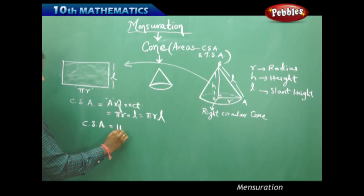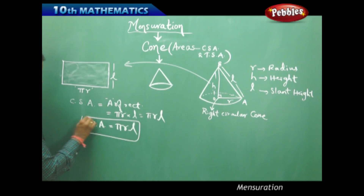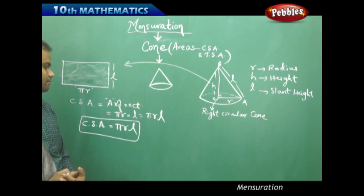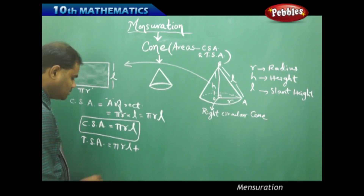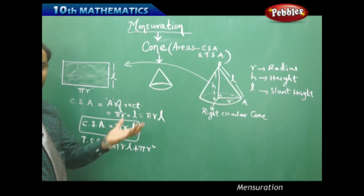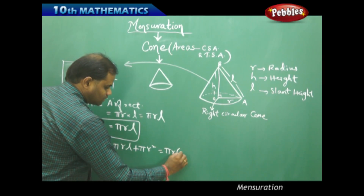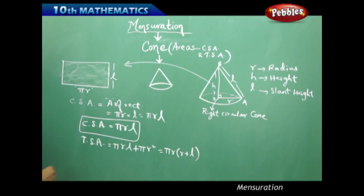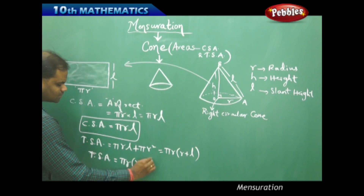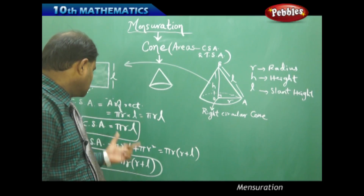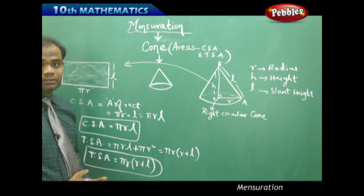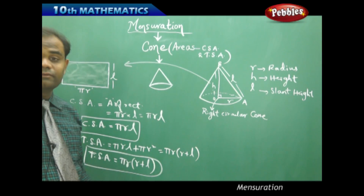Similarly, if I want to find the total surface area, it is πrl plus the area of the circular base, which is πr². On simplification this gives πr(r + l). Therefore, the TSA of a cone is πr(r + l). So the curved surface area, the total surface area, and the different dimensions are the different area properties of the cone.